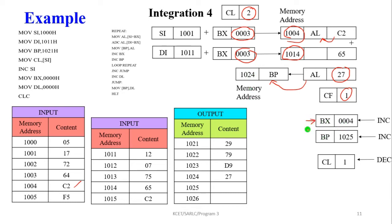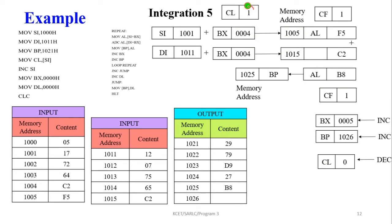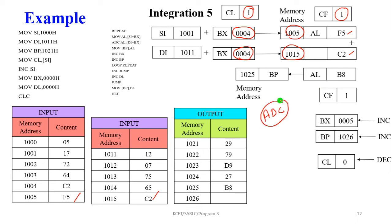BX and result pointer are incremented, CL is decremented to 1. Fifth iteration: CL is 1, CF is 1 (carry flag becomes 1). Byte pointer becomes 0004. We add SI+0004 and DI+0004: memory location 1005 contains F5 and memory location 1015 contains C2. We add these two values along with the carry using ADC. ADC means addition along with carry. The carry flag contains 1, so we perform the addition.